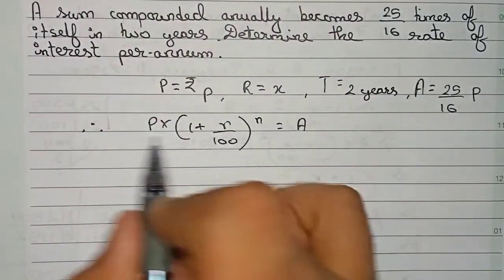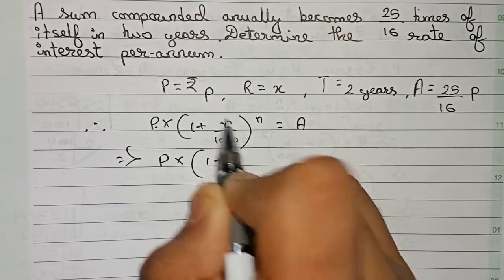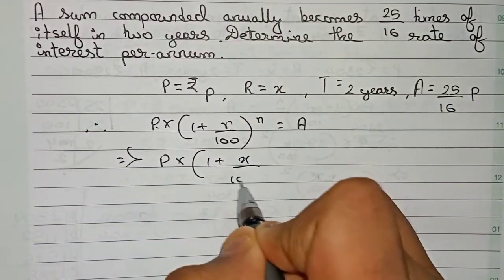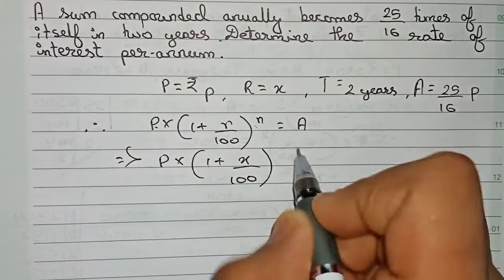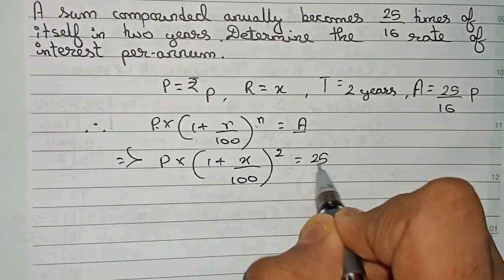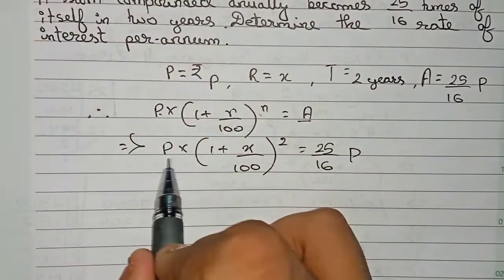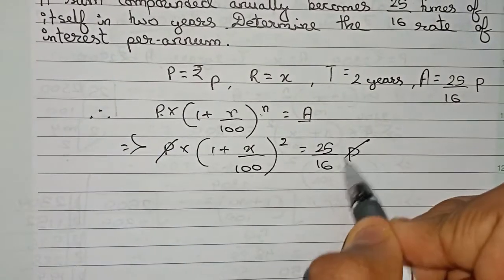Now I put down the values. Principal is P into (1 plus rate, which is x by 100) to the power n, which is to the power 2, equals the amount, which is 25 by 16 into P. Here firstly we cut the P.